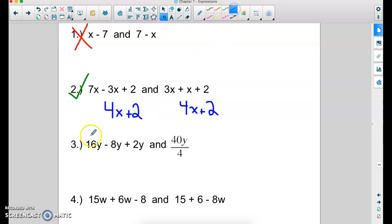And number three, I have 16y minus 8y plus 2y. Well, 16y minus 8y equals 8y. And then plus another 2y. This equals 10y. What about this one right here? Do you remember what operation a fraction is? It's division. So we're doing 40y divided by 4. And that also equals 10y. So are these two expressions equivalent? The answer is yes, they are.